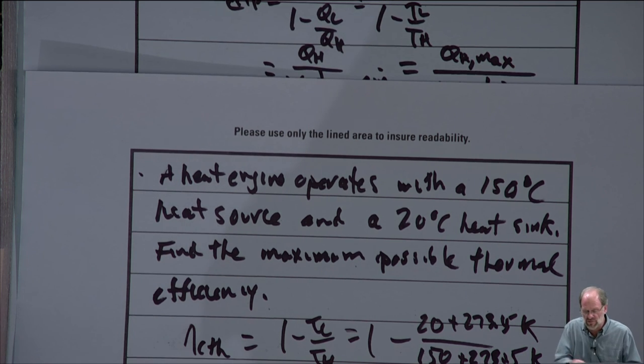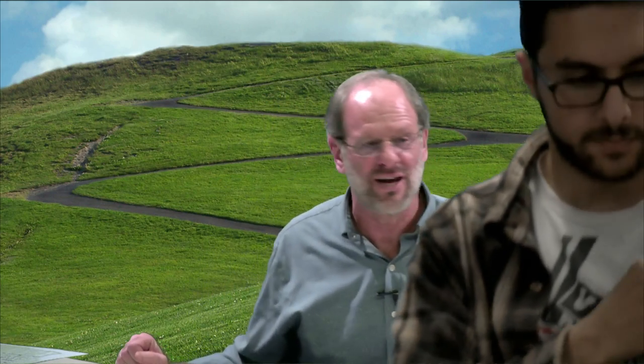I'm out of time. I have two more example problems which I'll continue with on Friday. Any last questions? For the Carnot cycle, the heat source and heat sink stay at constant temperature — it doesn't matter what their specific heats are because in the ideal sense nothing is changing. You're pulling as much heat as you want and getting no change to the heat source, or dumping as much heat as you want with no change to the heat sink. That's the nature of these ideal cycles. See you all on Friday — don't forget to turn in your homework due today.